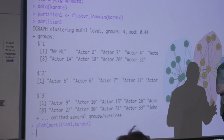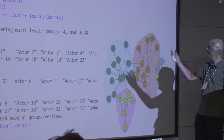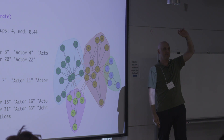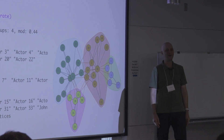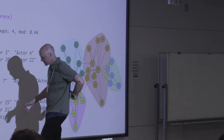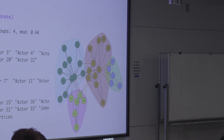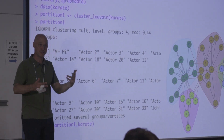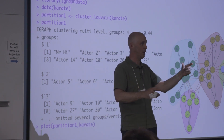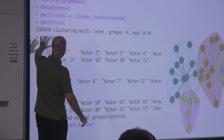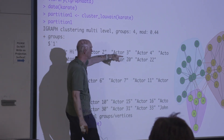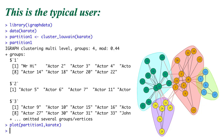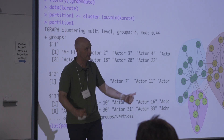The typical workflow: you load your data — it happens to be the Zachary Karate Club — then you pick your favorite cluster routine from the many things in igraph and run it. It gives you a partition — a set of community labels where every node has been put into a community, a hard partitioning. Here it happens to group nodes into four groups, tells you the modularity at gamma equals one is 0.44, and draws a pretty picture. If you're happy with that pretty picture and it matches your story, you're done.